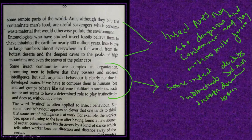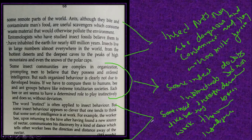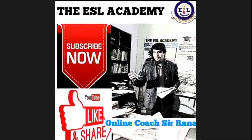The word instinct is often applied to insect behavior, but some insect behavior appears so clever that one tends to think there is some sort of intelligence at work. For example, worker bees, upon returning after having found a new source of nectar, communicate by a kind of dance — telling other worker bees the direction and distance of the nectar source. This shows that some insects work through intelligence, while others have purely instinctive roles.